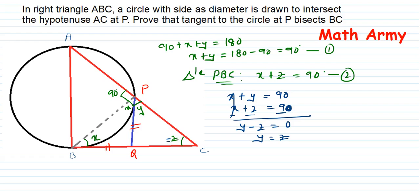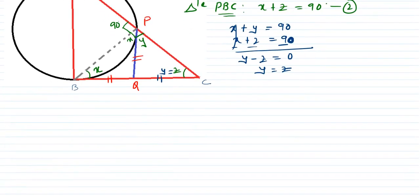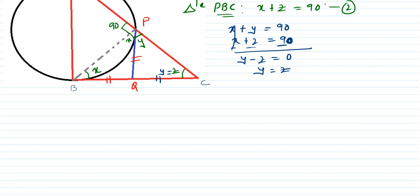Once we know that angle Y equals angle Z — from angle Y, QC is the opposite side, and from angle Z, PQ is the opposite side. So by default, PQ equals QC. Combining everything: BQ equals PQ equals QC. Therefore, since all three are equal to each other, BQ equals QC.